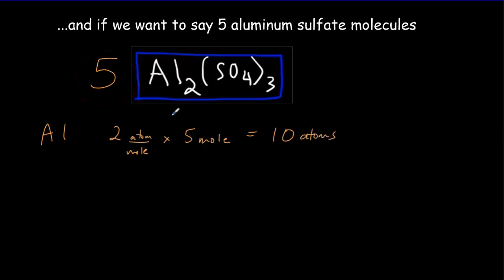For the sulfur, we'd have one atom per ion times three ions per molecule times five molecules. So we'd get 15 atoms of sulfur.